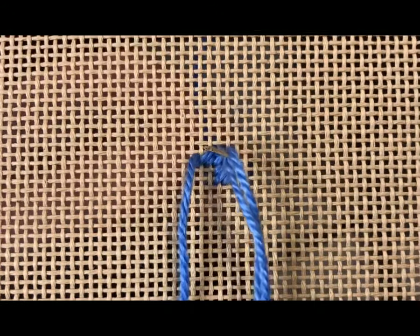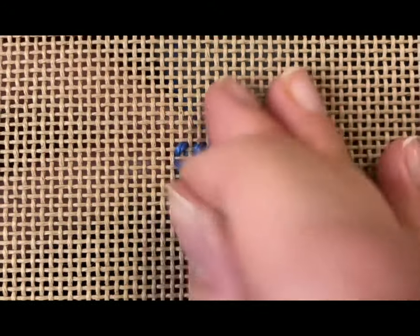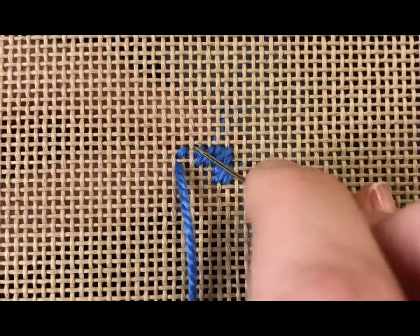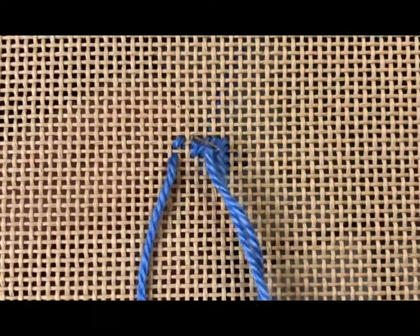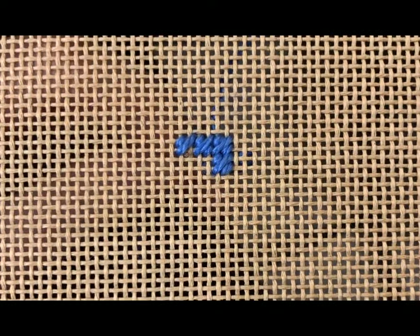So now that I've completed my up row, because I have ended next to my initial stitch, I will go over two holes from my last tent stitch to start my next tent stitch. Then I will drop down one hole to start my long stitch, and I will complete the stitch with another tent stitch.